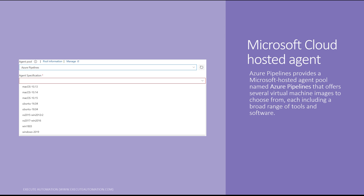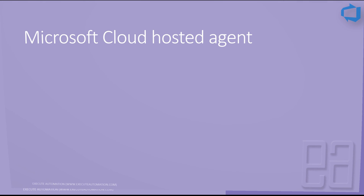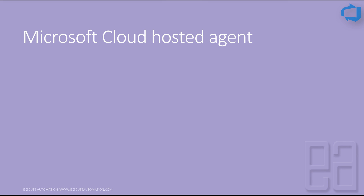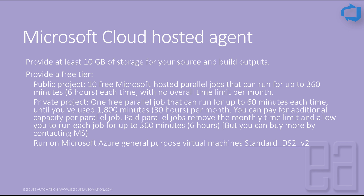Every time you choose this agent in Azure Pipelines, a new virtual machine is spawned and allocated for you. It executes all the work — building or deploying your application — and is then discarded once the job is done. The Microsoft cloud hosted agent provides at least 10 GB of storage for your source code and build output.